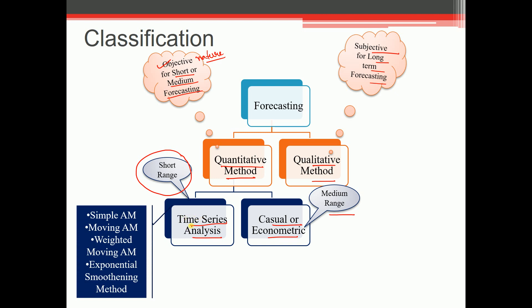Now broadly speaking this time series analysis we have got these methods. First one is your simple average method, or SAM which becomes simple average method. Then we have weighted moving average method, you can call this as WMAM which is weighted moving average method. Then we have exponential smoothening method which is ESM. So these are the different methods that we have to study for numericals and these comes under the category of time series analysis which is basically used for the short range forecasting.